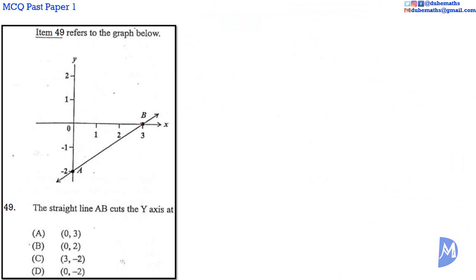Question 49. AB cuts the y-axis at A. The coordinate of A is 0, negative 2. The answer is D.